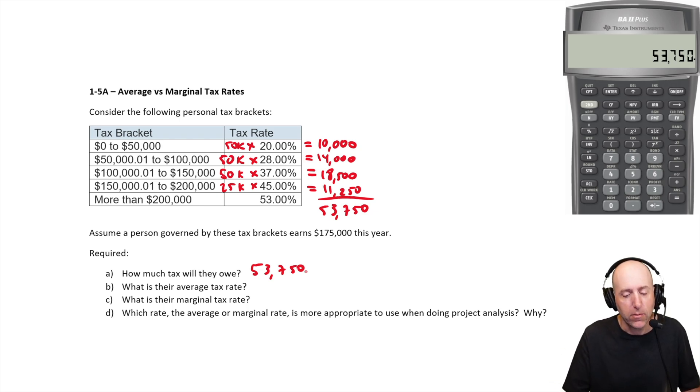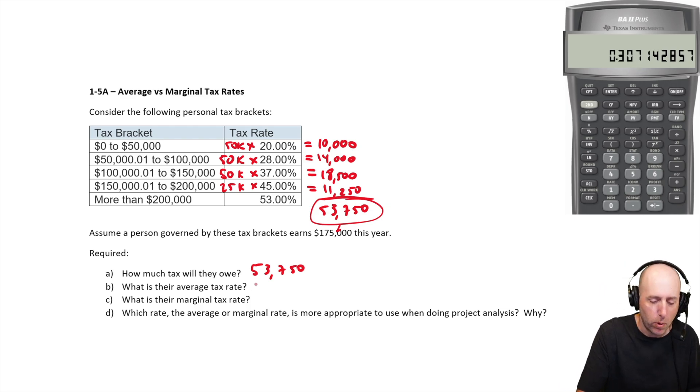What's their average tax rate? Well, you take that $53,000 and you divide by how much we earn? $175,000. So take $53,000 divided by $175,000. And on average, it's 30.7%.